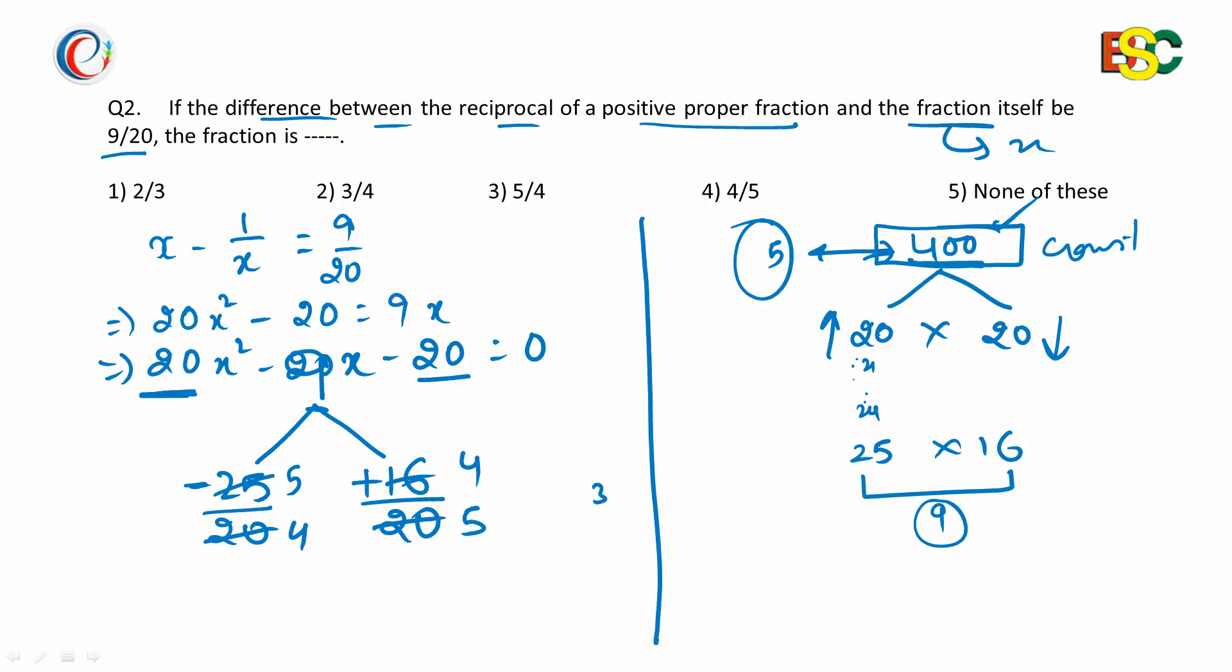That is 5/4 and -4/5. On changing the sign of +4/5, we get -4/5. Now since this is a negative number, we'll reject this. So we obtained the number as 5/4, and the reciprocal of this number is 4/5.